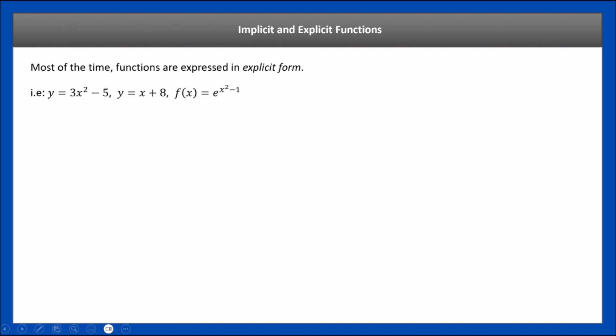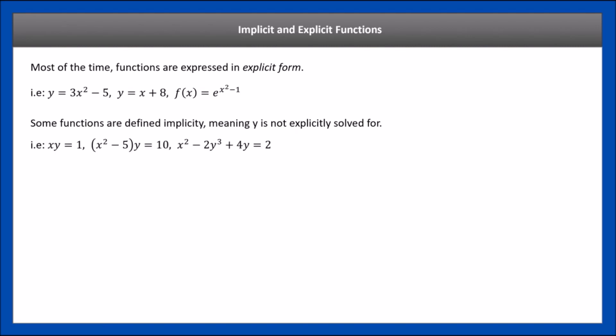Here are some examples of implicit form. If it's defined implicitly, that means you're not explicitly solving for one of the variables — in this case y. For example, x·y equals 1. Here, y is not explicitly solved for. If you divide both sides by x, you get y equals 1 over x, and now it's explicitly solved for.